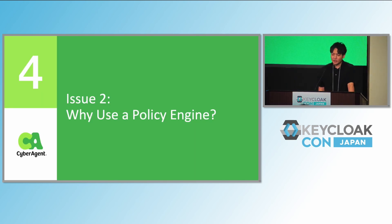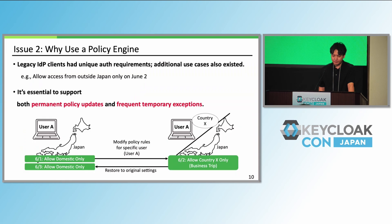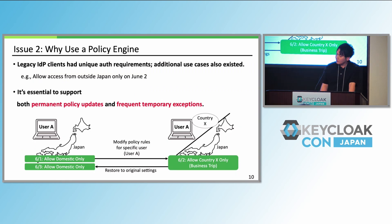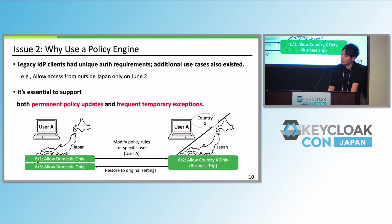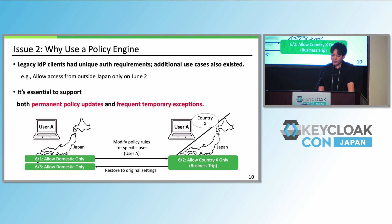Why use a policy engine? Many legacy clients had unique requirements — for example, allow access from outside Japan on June 2nd only. So we needed to support both permanent policy rules and temporary exceptions. Hard-coding this logic was too risky and inflexible.